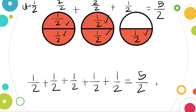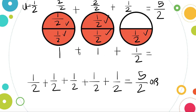If I have an improper fraction, that means I can also express it as a mixed number. We can see that the first whole circle is entirely shaded in, and the next whole is entirely shaded in as well, but the last circle only has one-half shaded in. So we have one whole plus one whole equals two wholes, and a proper fraction of one-half. The sum of our unit fractions also equals two and one-half.